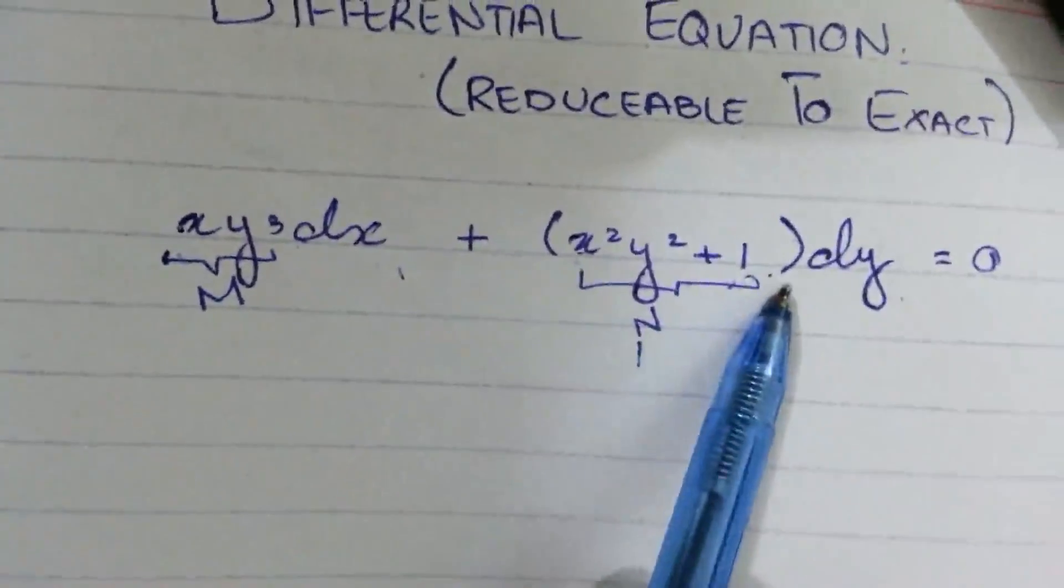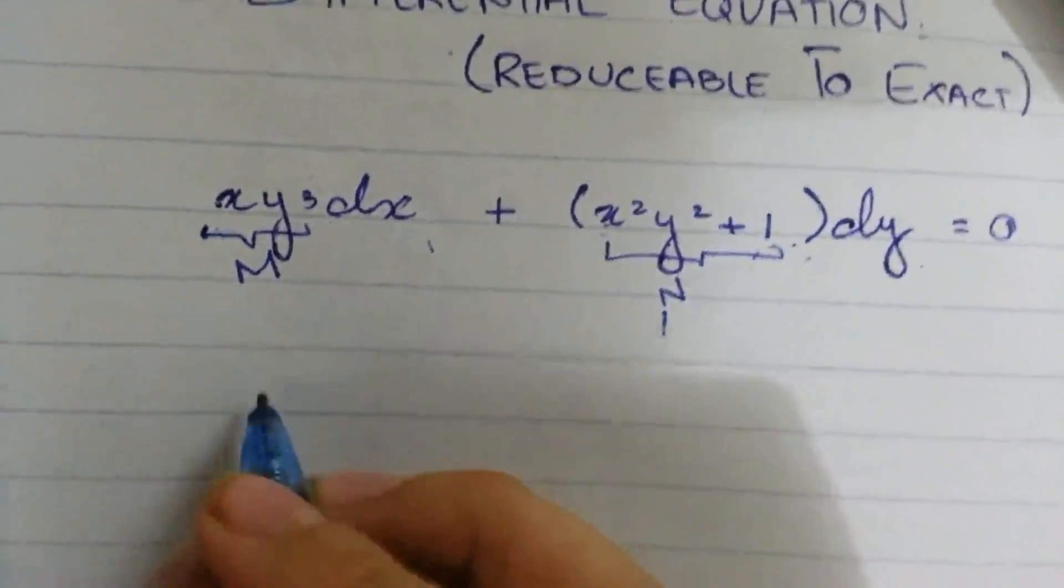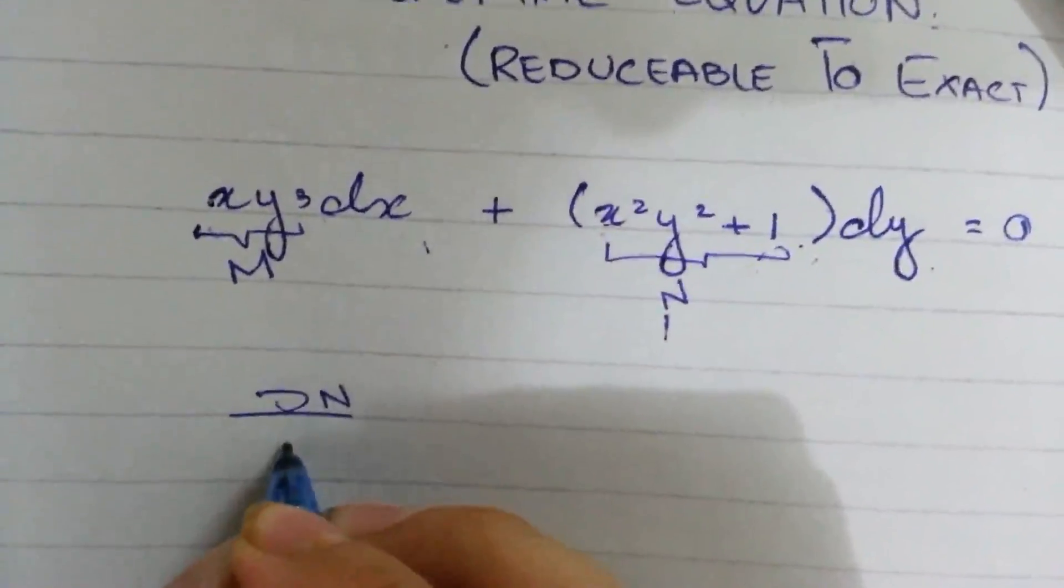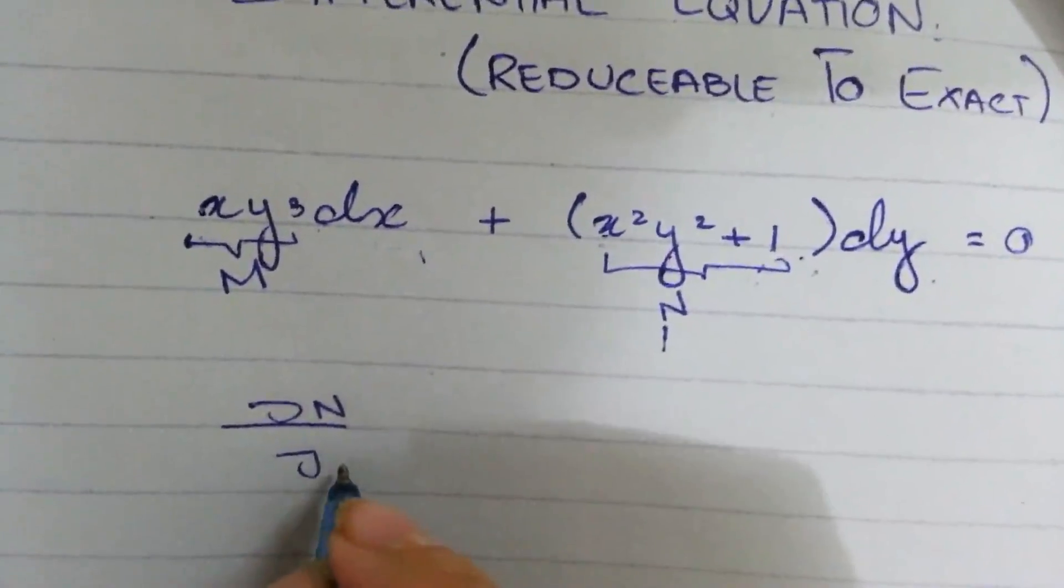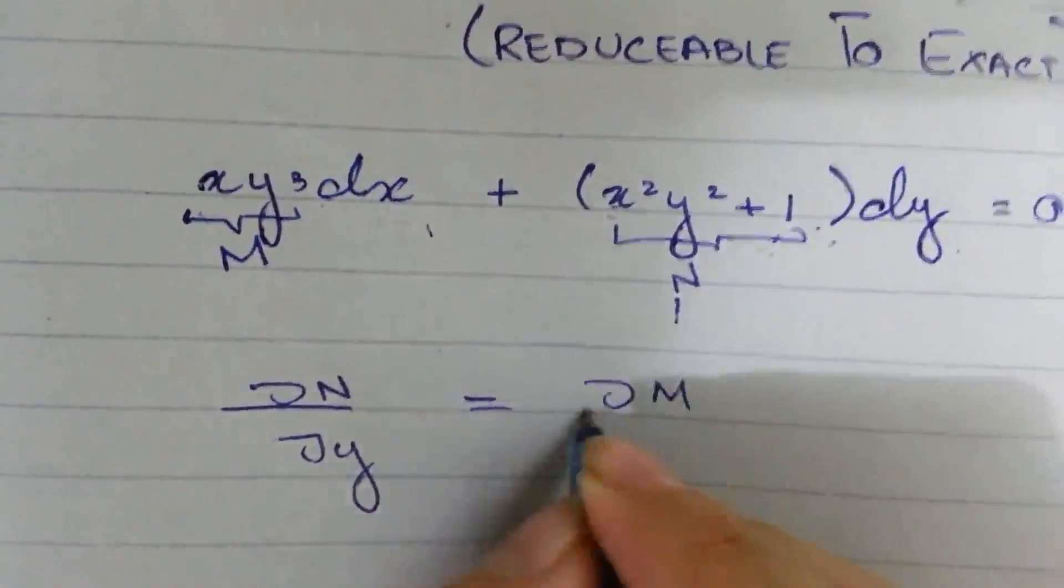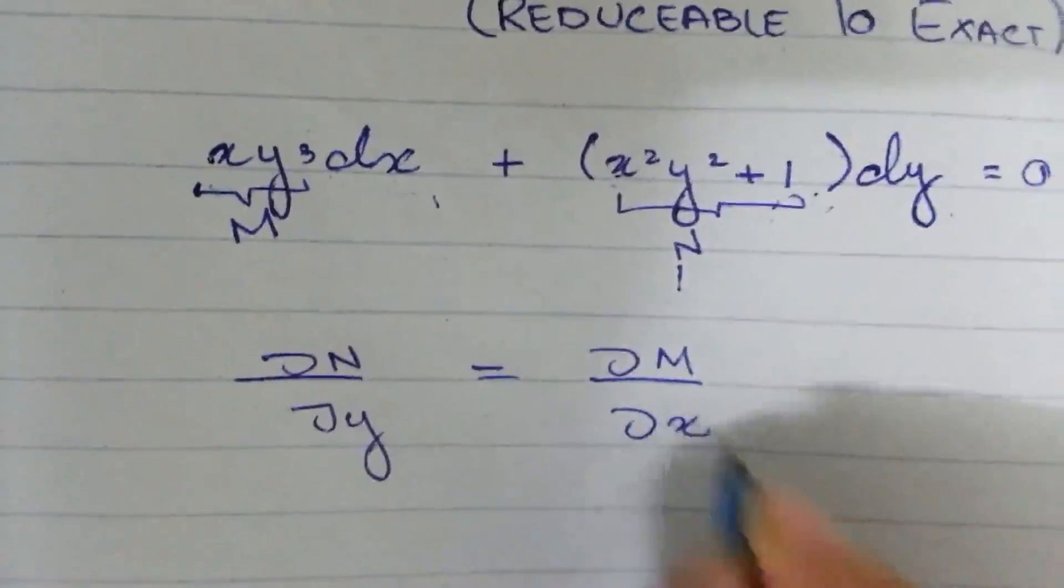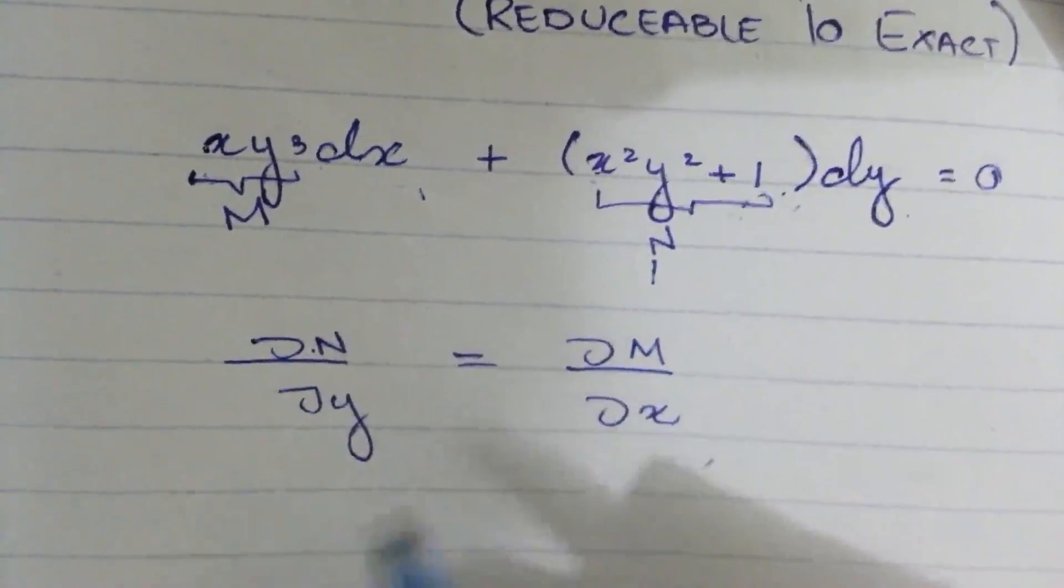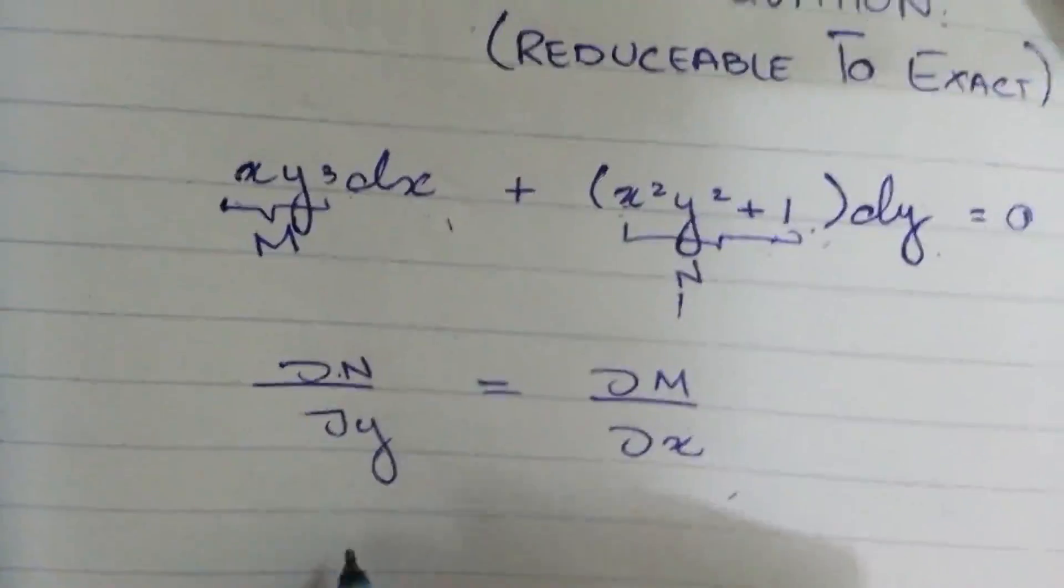First, we check whether this equation is exact or not. To check, we apply the test ∂N/∂y = ∂M/∂x. When we differentiate N with respect to y and M with respect to x, we can compare the results.